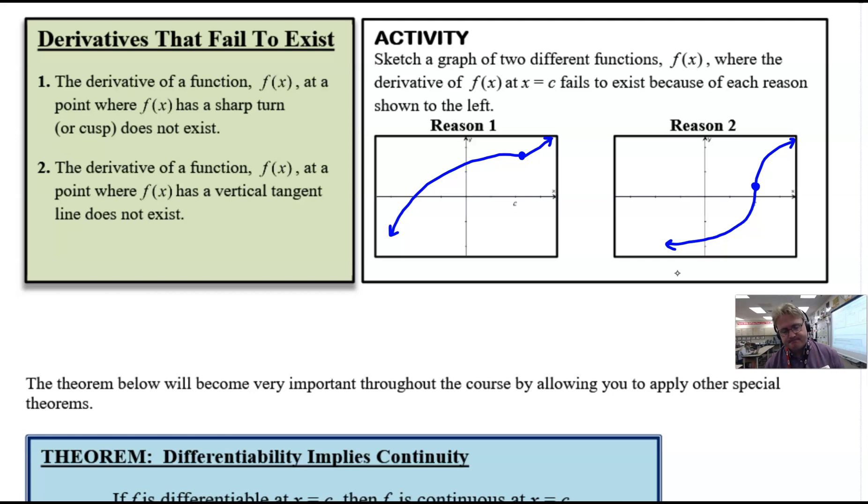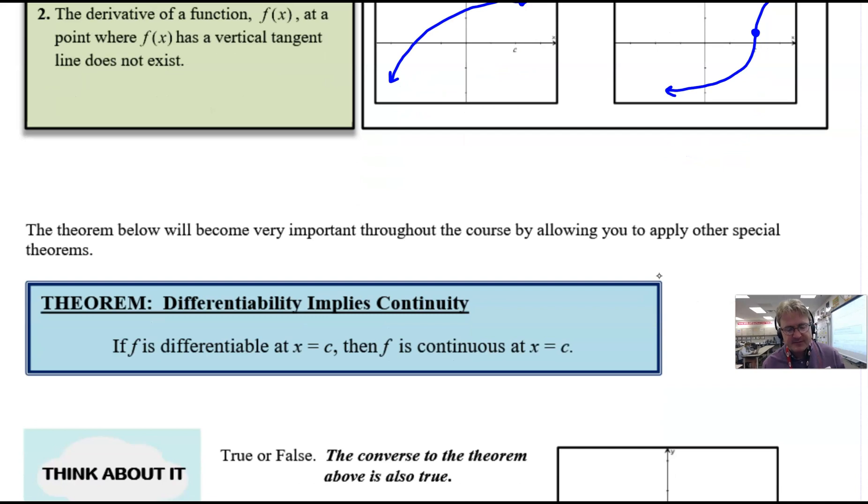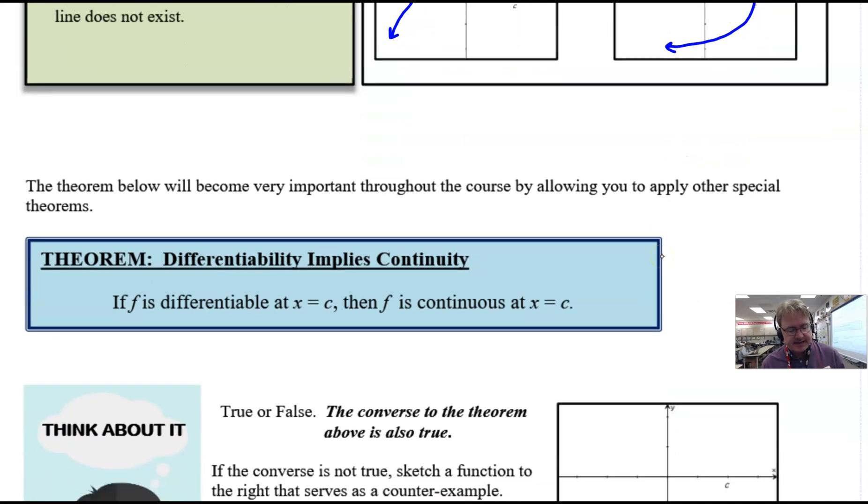The theorem below here will become very important throughout the course by allowing you to apply it to special theorems. Differentiability implies continuity—it's one of our easiest theorems, just one we're going to have to tuck away and remember and bring out when the time comes. It simply says if you have a function that you know is differentiable at c, it means that function has to be continuous. It's pretty hard to draw a slope of a tangent line to a point if you don't have a point there already.